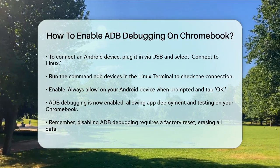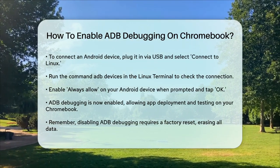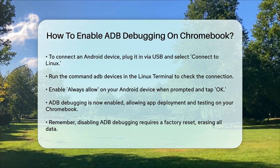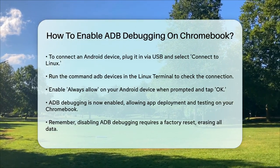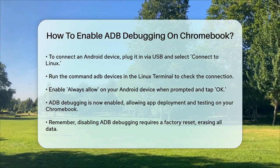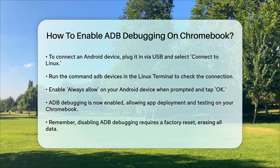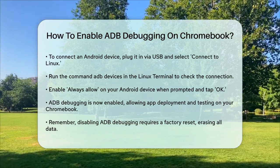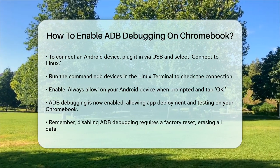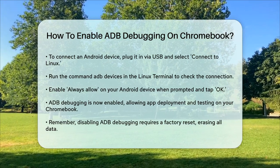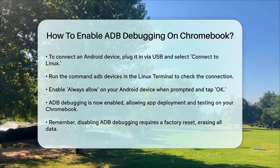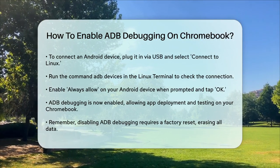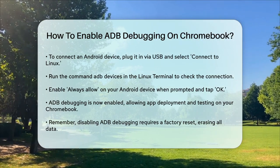That's it. You've successfully enabled ADB debugging on your Chromebook. Now you can deploy and test your Android apps directly from your Chromebook using Android Studio or by loading an APK via the terminal. Remember, if you ever need to turn off ADB debugging, you'll have to factory reset your Chromebook, which will erase all your data. So use this feature wisely and only when necessary.